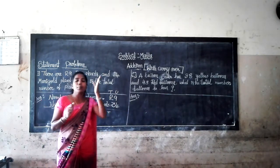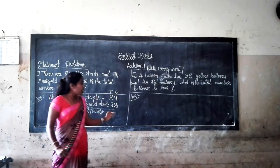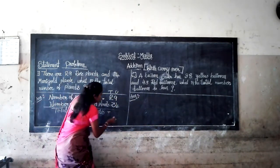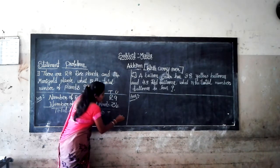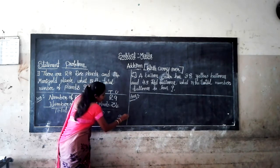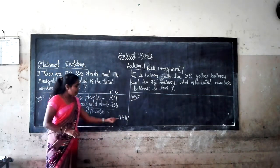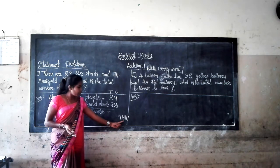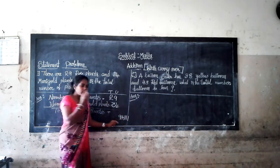First we add the unit place numbers. Unit place numbers are 9 and 4. Let's add 9 and 4. Count on from 9: 10, 11, 12, 13.